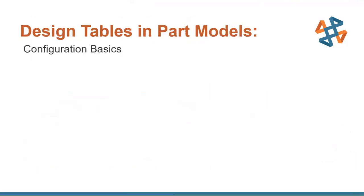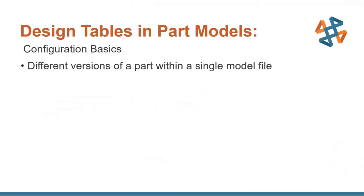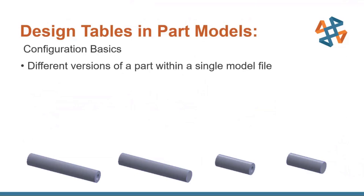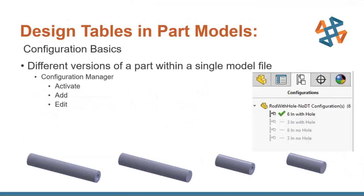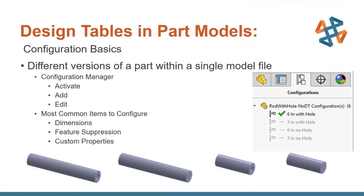Configuration basics: these are different versions of a part within a single model file. We find this in the Configuration Manager — the third tab over in most SOLIDWORKS setups, showing two little squares at the top listing our different configurations. We have the ability to activate, add, or edit configurations. The most common items we configure are dimensions, feature suppression, and custom properties. There are other things we can control, but those are the three main ones.